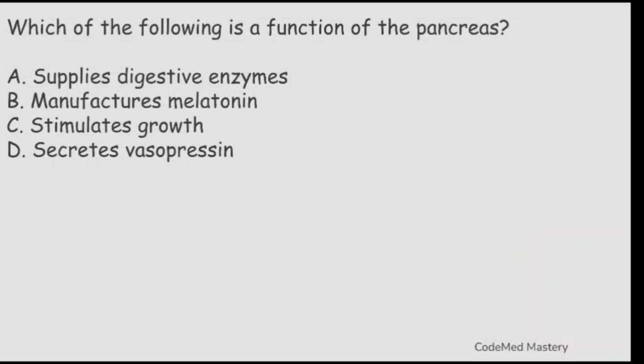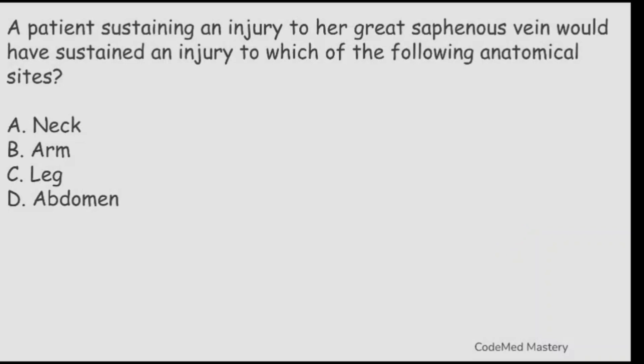Next question: which of the following is a function of the pancreas? Option A: supplies digestive enzymes. Option B: manufactures melatonin. Option C: stimulates growth. Option D: secretes vasopressin. The right answer is option A, supplies digestive enzymes. The pancreas contains exocrine glands that produce enzymes important for digestion.